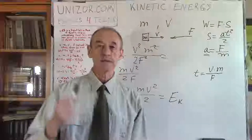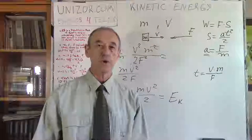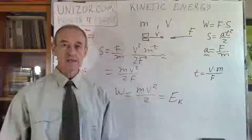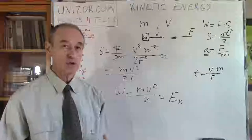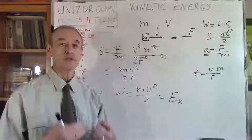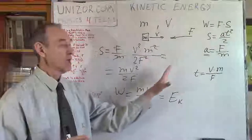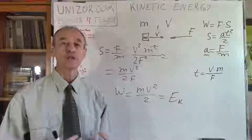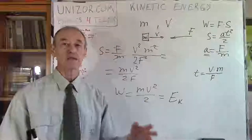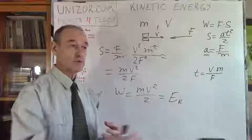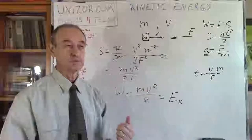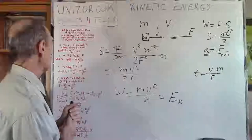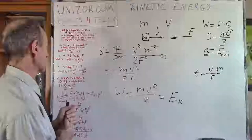That's extremely important: kinetic energy of the moving object depends only on the object and its motion, independent of any outside forces. This formula justifies the initial definition — kinetic energy is a quantitative characteristic of the object in motion, not of anything outside it. Though the work needed obviously depends on the objects that interact with it.